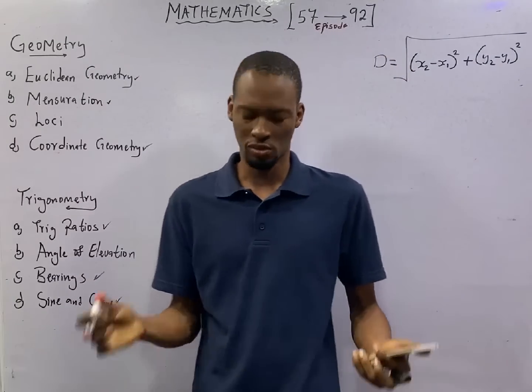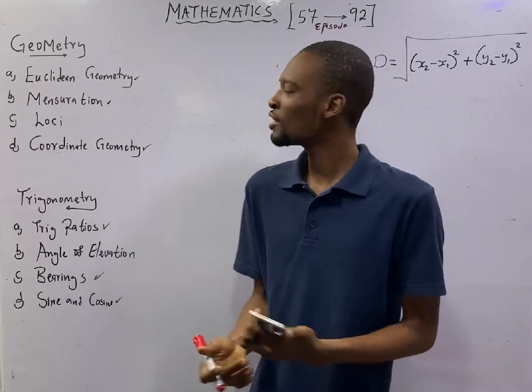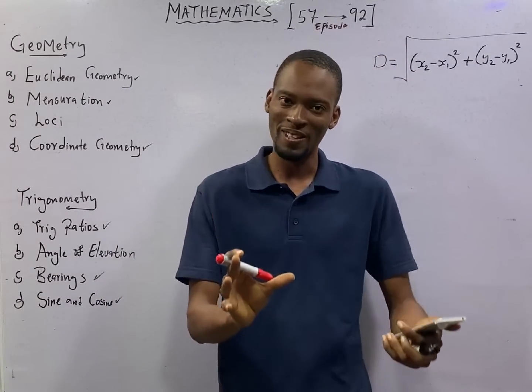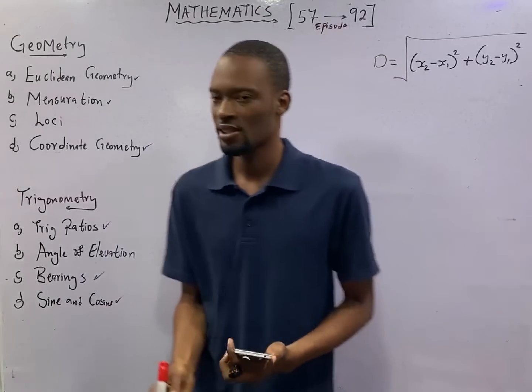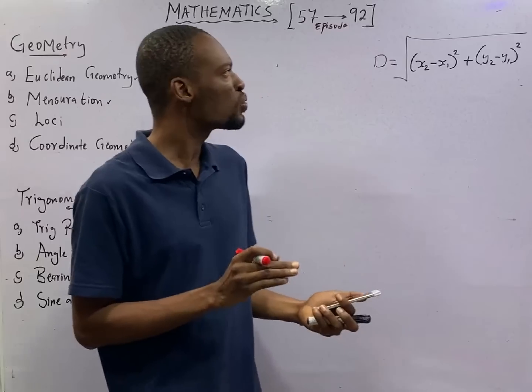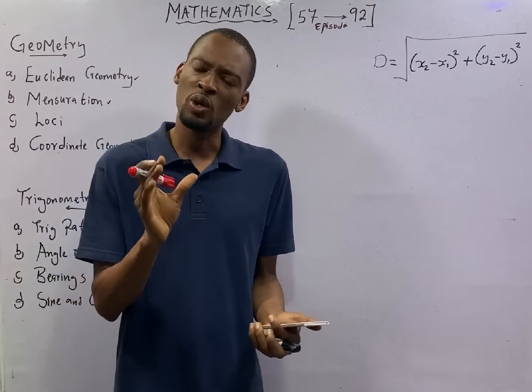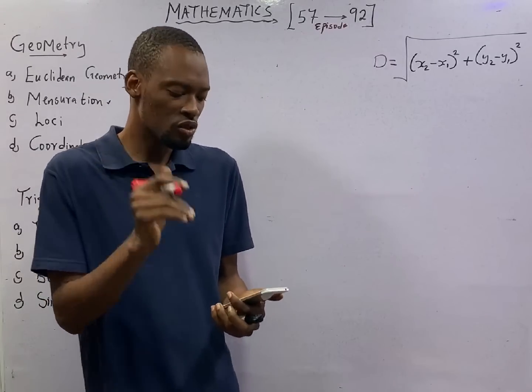This is episode number 72 of the 120 Days to JAMB Mathematics with Flash Isaac. In this episode, we shall be looking at the distance between two points when it comes to coordinate geometry.